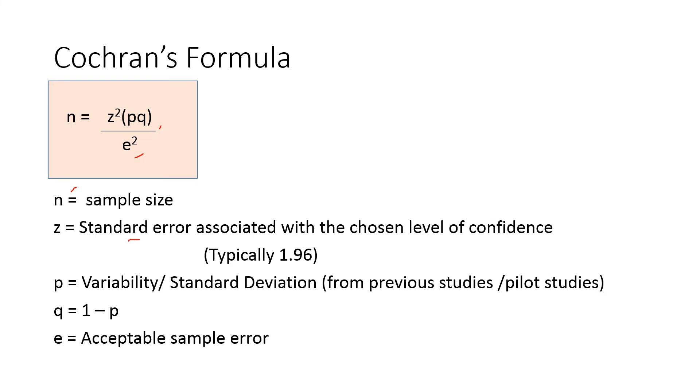Z is a standard error associated with the chosen level of confidence. And if the level of confidence is 95 percentage, and that is what normally we are taking, then the typical value of z will be 1.96.